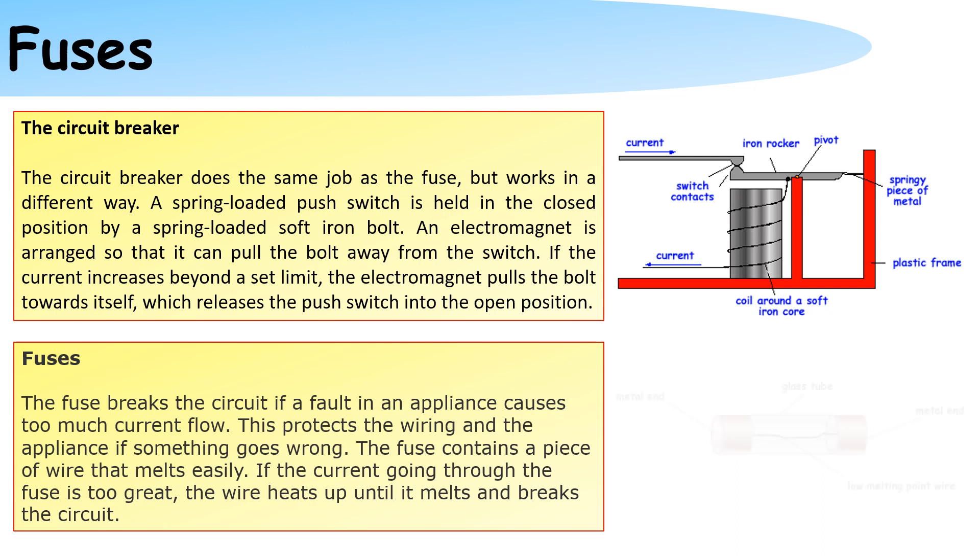The fuse breaks the circuit if there is a fault in the appliance that causes too much current to flow. This protects the wiring in the appliance if something goes wrong. The fuse contains a piece of wire that melts easily. If the current going through the fuse is too great the wire heats up until it melts and breaks the circuit.